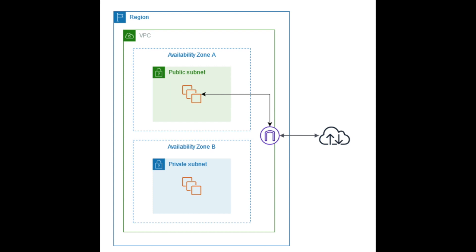Today we will see this setup. First, see the components: one is the region — you can choose any region where you want to create this. Inside that we will create one VPC, and the VPC will have particular availability zones like availability zone A and availability zone B. We will choose one of these two to demonstrate this setup, and then we will create two subnets — one will be private and one will be public.